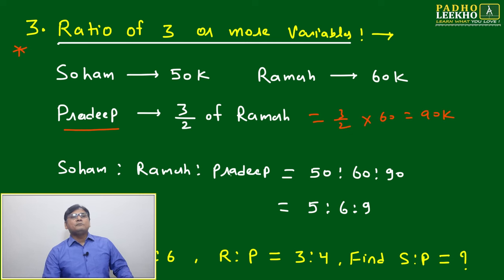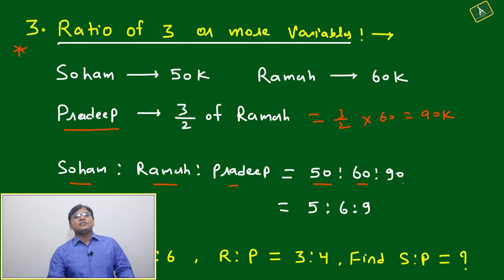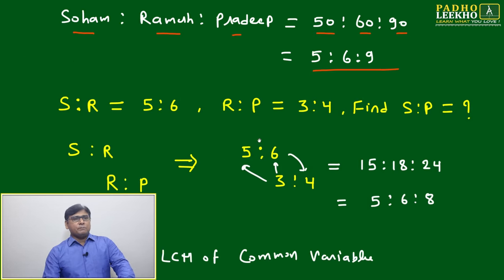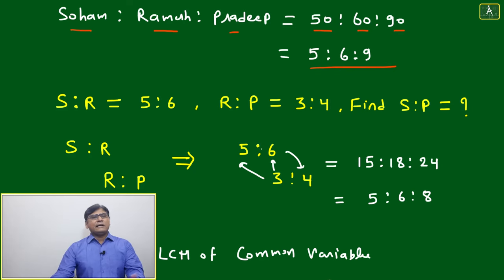So Pradeep is getting 90k. Then what will be the ratio between Soham, Ramesh, and Pradeep? 50:60:90, which is 5:6:9. Now this was simple if three persons' data is given clearly.